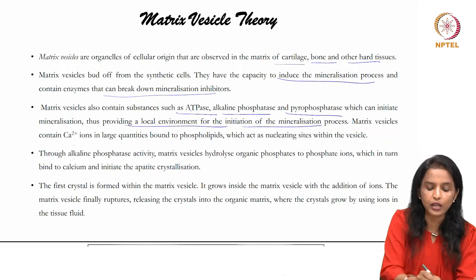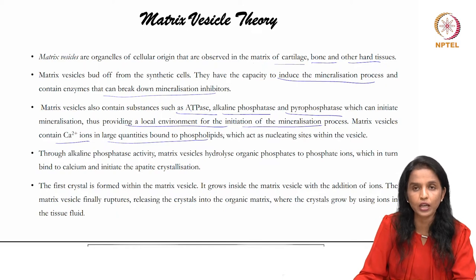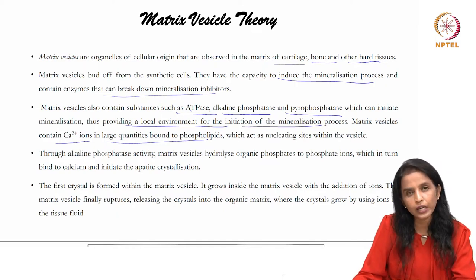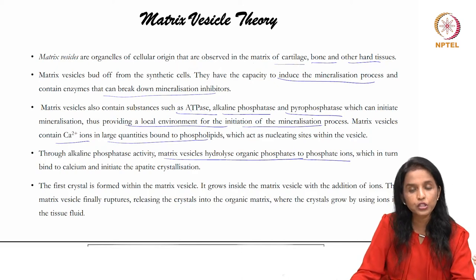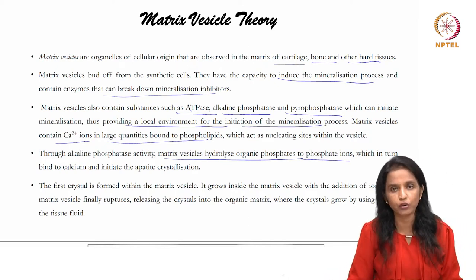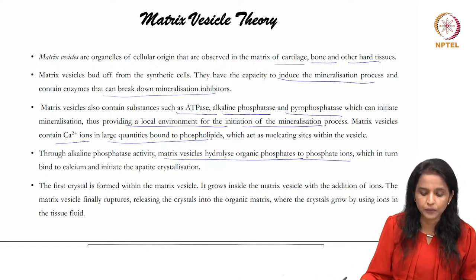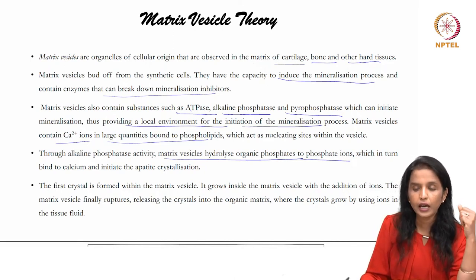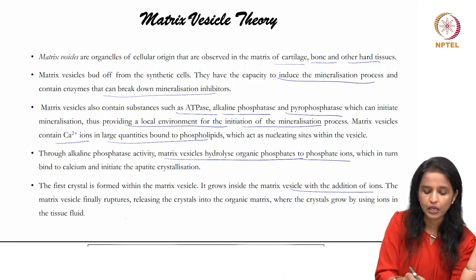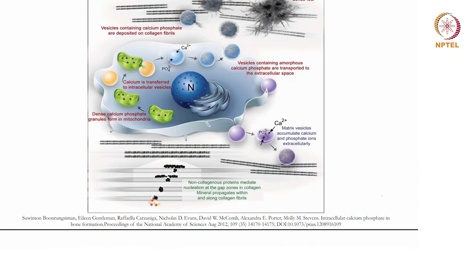Matrix vesicles contain calcium ions in large quantities bound to phospholipids, which act as nucleating sites within the vesicle. Alkaline phosphatase activity within matrix vesicles also hydrolyzes organic phosphates to phosphate ions, further strengthening hydroxyapatite crystals and initiating apatite crystallization. The first crystal initiates inside the matrix vesicle, grows by addition of ions, and then the vesicle ruptures, releasing crystals into the organic matrix where growth continues.